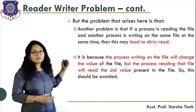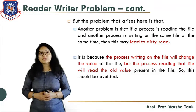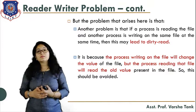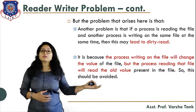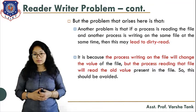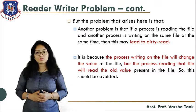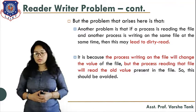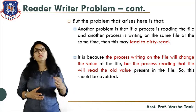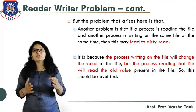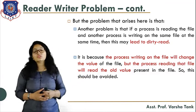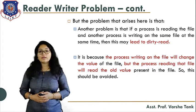The next problem is: if one process is reading a file and another process is writing on the same file at the same time, it will lead to a dirty read. For example, process P1 has read value 7, but process P2 updates that value to 9. So P1 is reading the old value 7, while the new value is 9 — that is the dirty read. This should be avoided. These are the two problems we need to solve in the Reader-Writer problem.